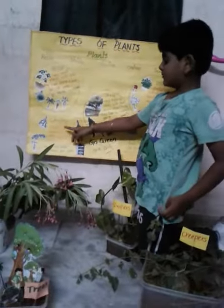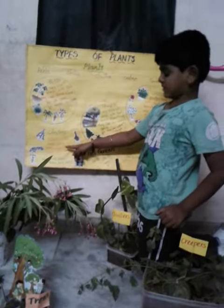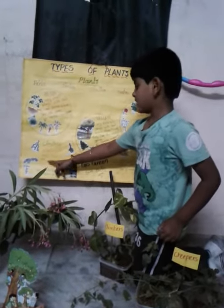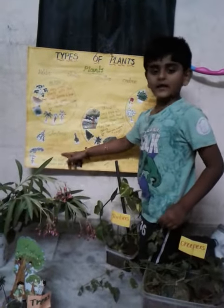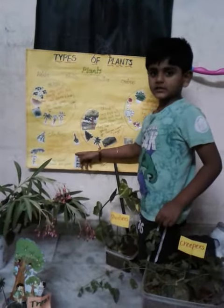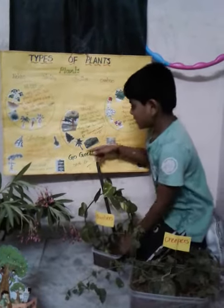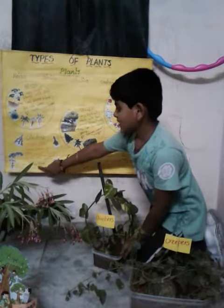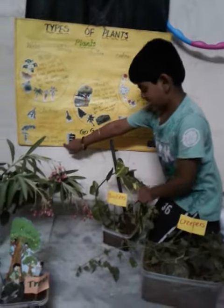Climbers. Plants with weak stems and need support to climb. Examples: money plant, green pea plants.